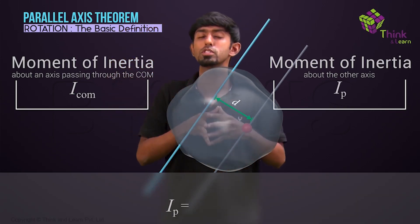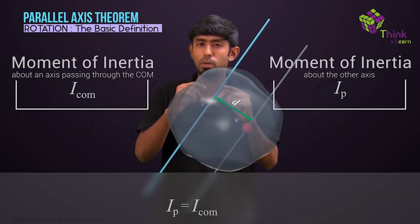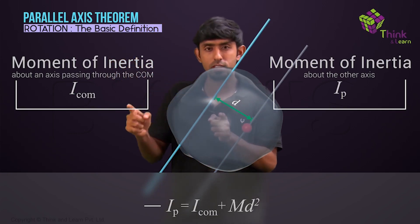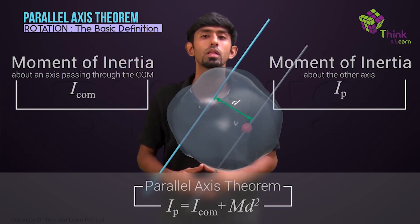Then IP equals I of center of mass plus mass of this entire body into D squared, where the D is the distance between these two lines.